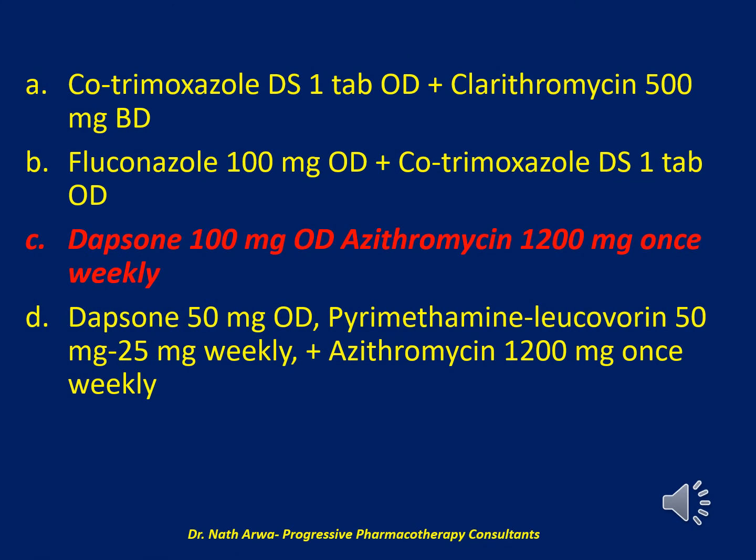The correct answer is C. Dapsone 100 mg once daily plus azithromycin 1200 mg once weekly. Pyrimethamine and leucovorin used in combination with dapsone will provide adequate toxoplasmosis prophylaxis in patients at risk of infection who are also sulfa-allergic. However, this patient's toxoplasmosis IgG is negative, indicating that he has never been exposed, so he does not require prophylaxis. Answer B is inappropriate since fluconazole is not recommended for oropharyngeal candidiasis prophylaxis. The patient is sulfa-allergic, so cotrimoxazole is not an appropriate choice for Pneumocystis prophylaxis.